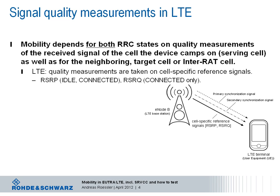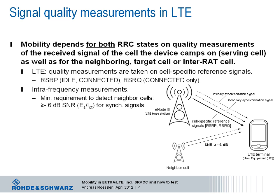So these are the LTE-specific measurements. To detect neighboring cells on the same carrier frequency, the minimum requirement is that there is a good enough signal-to-noise ratio for the synchronization signals — at least minus 6 dB SNR — to detect neighboring cells. Simulations have shown that cells could be detected in 800 milliseconds or less. This assumes there is no DRX cycle defined and no measurement gap to measure different LTE frequency bands or other radio access technologies.